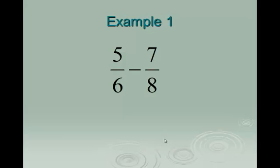Think to yourself: what's a common denominator for 6 and 8? In other words, what is a number that 6 and 8 both go into? Now you might think 48, but there's a smaller one. 24 is a number that both 6 and 8 go into, and that's the smallest number they both go into. So that's going to be our common denominator.